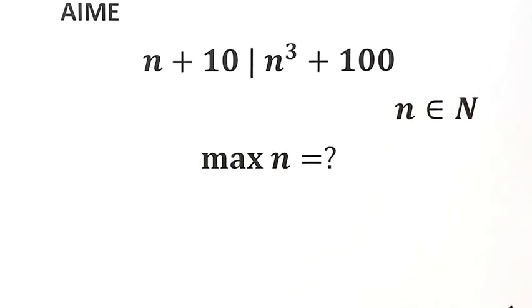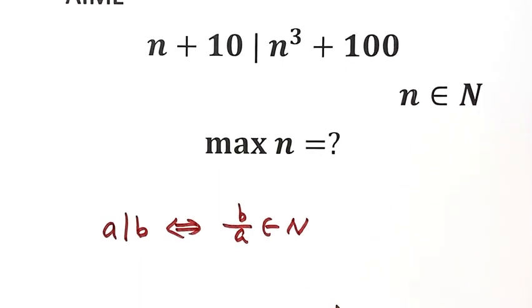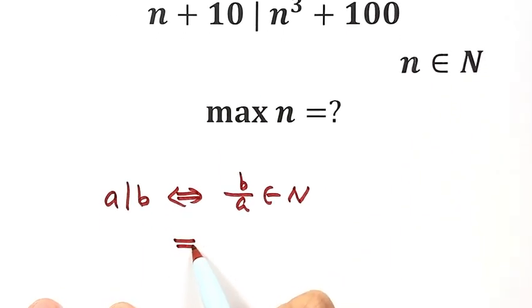First, let's see what a divides b means. That means b divided by a is a positive integer. It also means a is less than or equal to b.